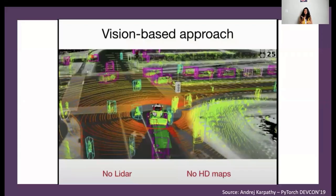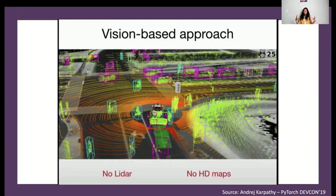Looking at the vision-based approach, what Andrej Karpathy mentioned is that Tesla is not using LiDAR technology. They don't have LiDAR sensors installed on top of the car like you see in most other self-driving cars. Tesla is completely built using cameras — only camera and image information to extract all details about the car's surroundings. It doesn't have regular LiDAR, nor HD maps created with LiDAR. It's a completely vision-based approach using only cameras.